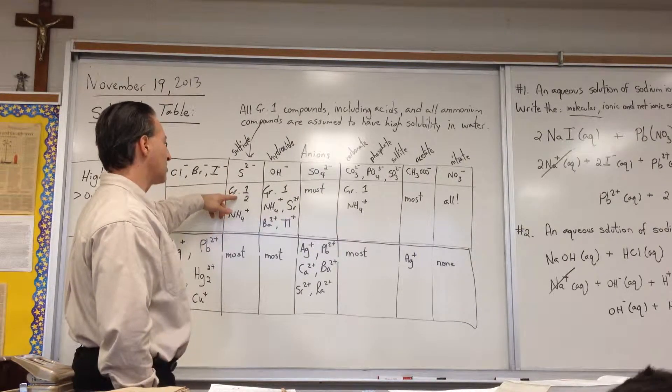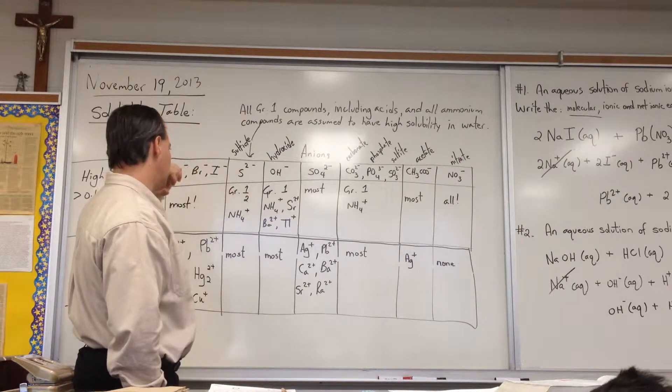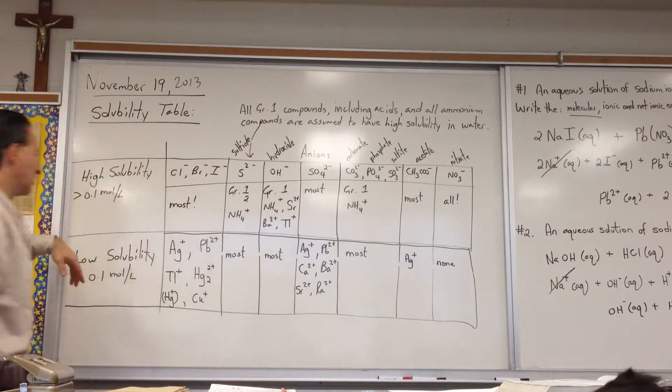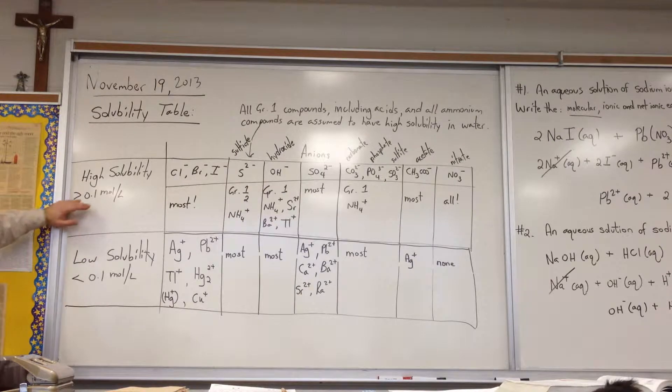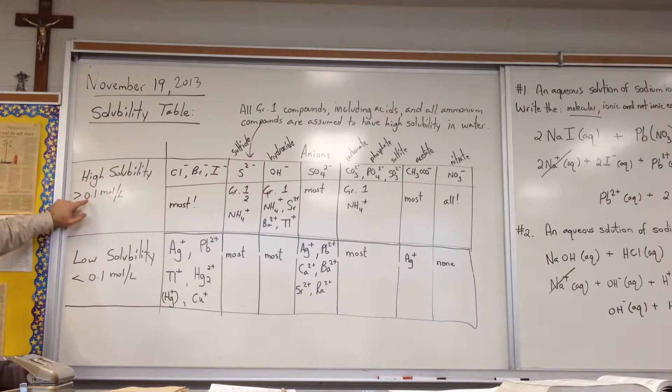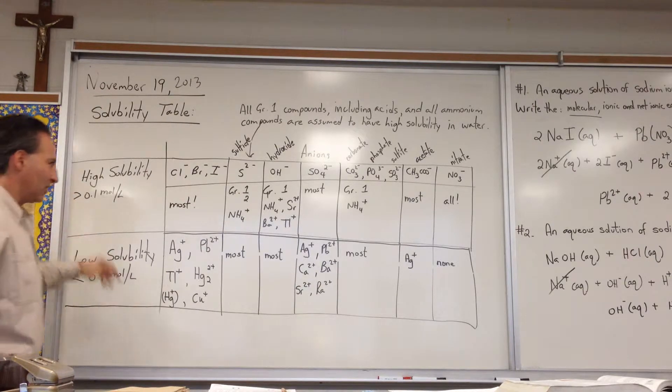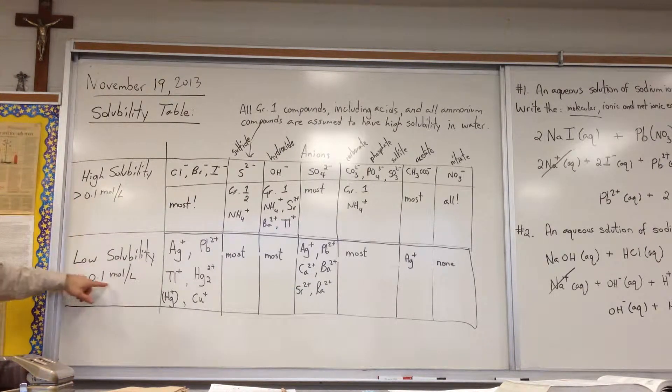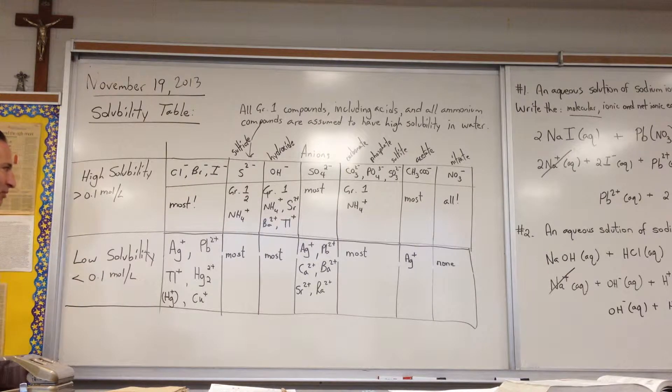For example, lithium sulfide is predicted to be soluble. The criterion for solubility is kind of wide-ranging. Anything that basically dissolves more than 0.1 mole per liter is considered highly soluble. It's not a very restrictive criteria, but that's what we're going to work with. Anything that is less than 0.1 mole per liter is considered low solubility.